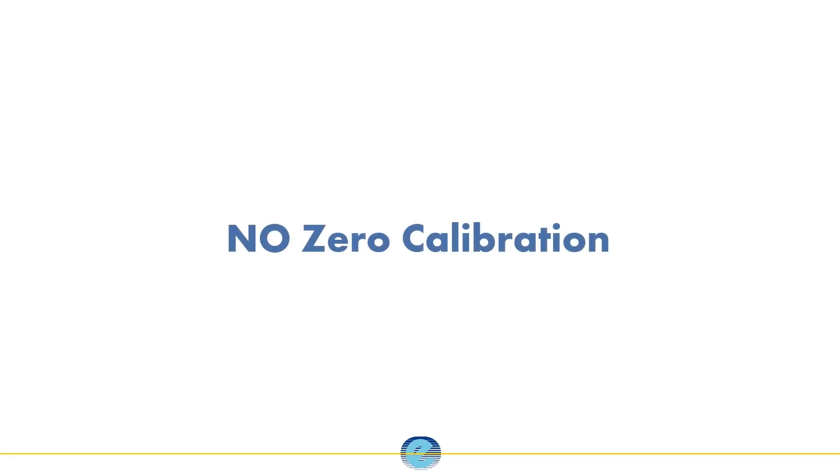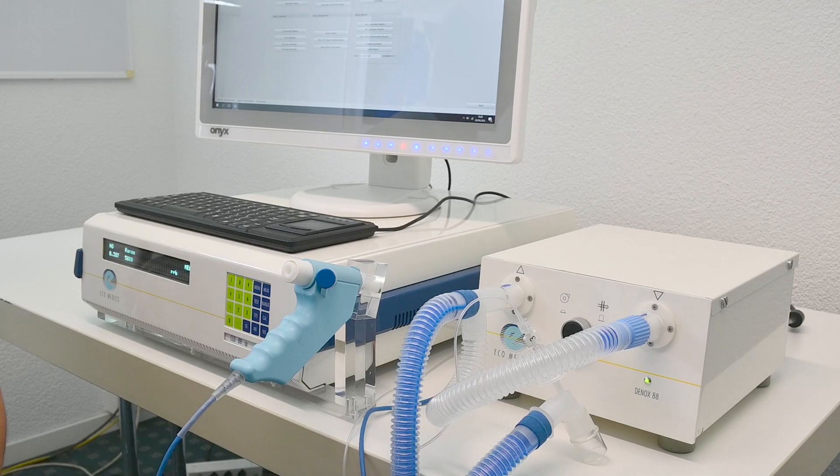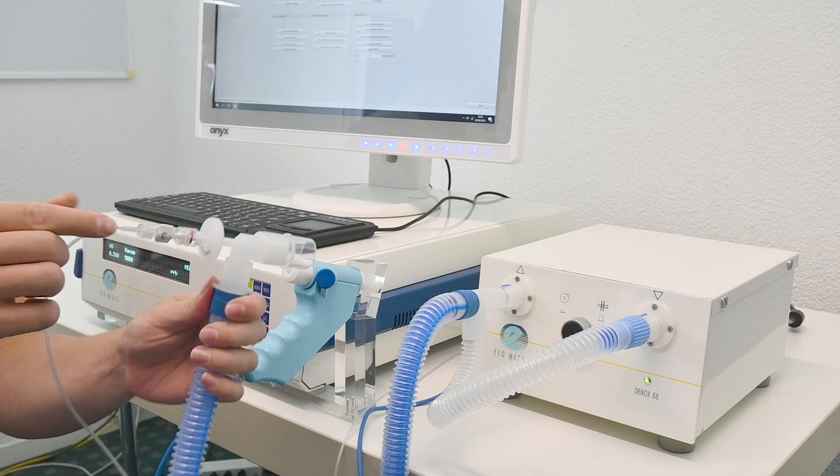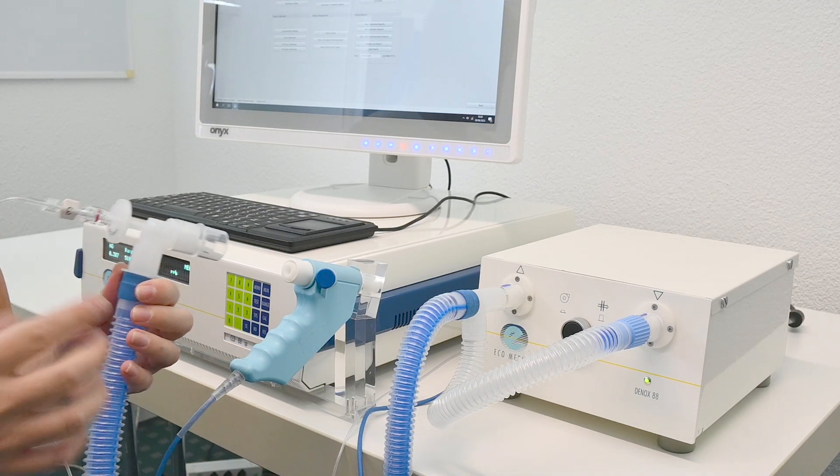The NO0 calibration procedure requires delivery of NO-free air from the DNOX to the sample tube. This is achieved by activating the blower mode of the DNOX module.